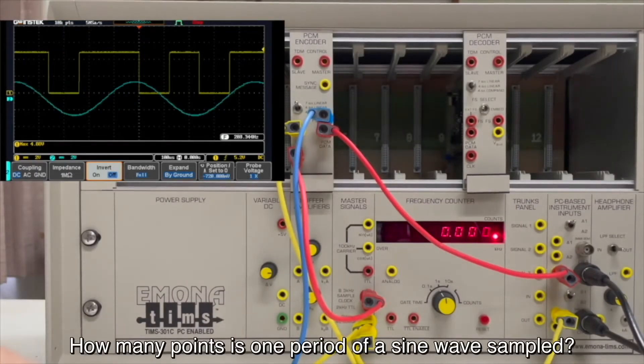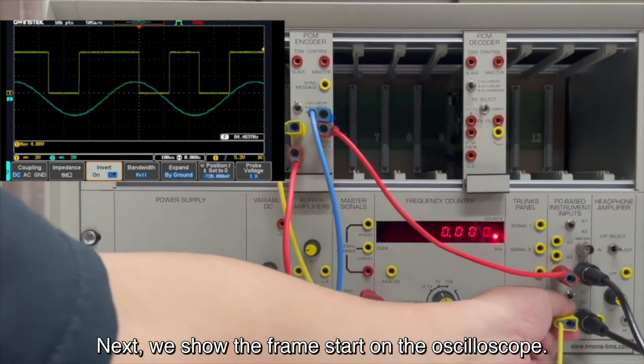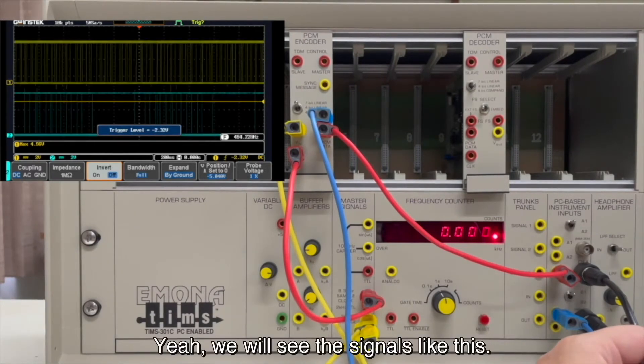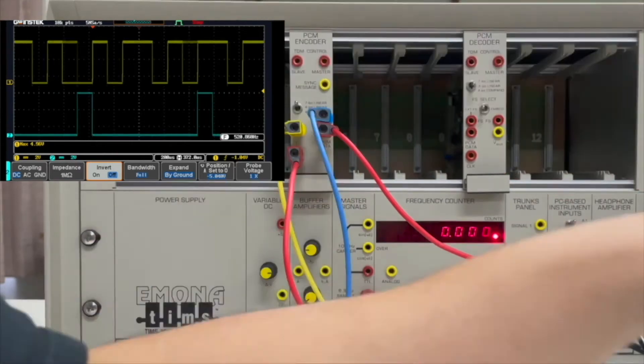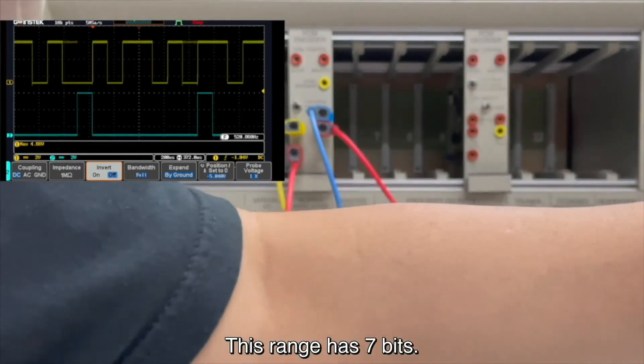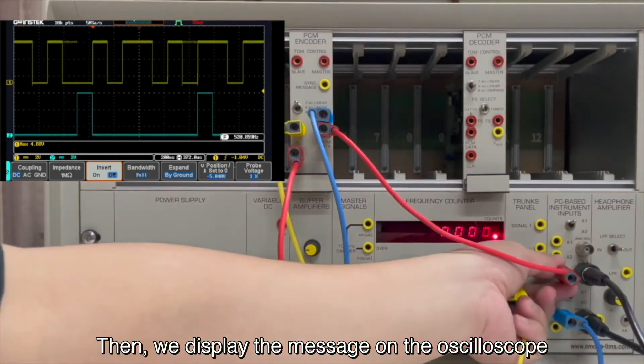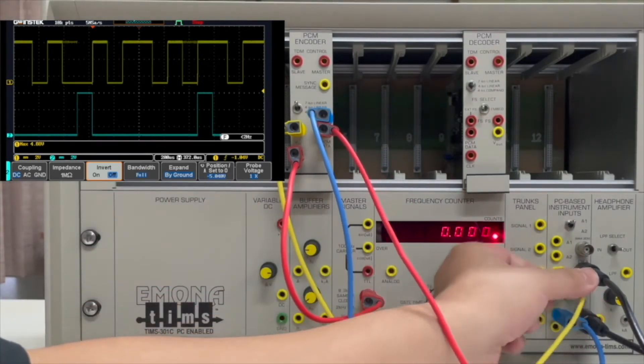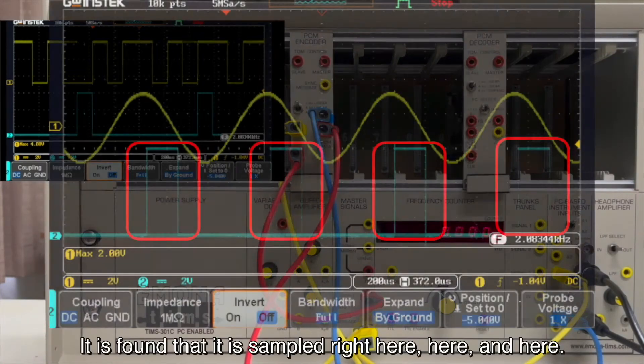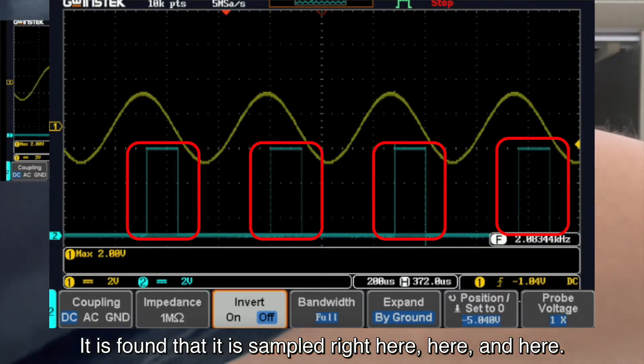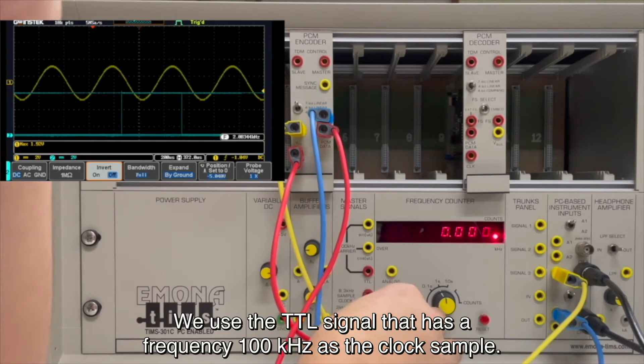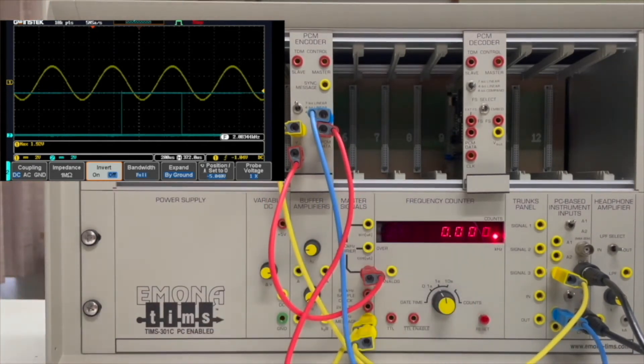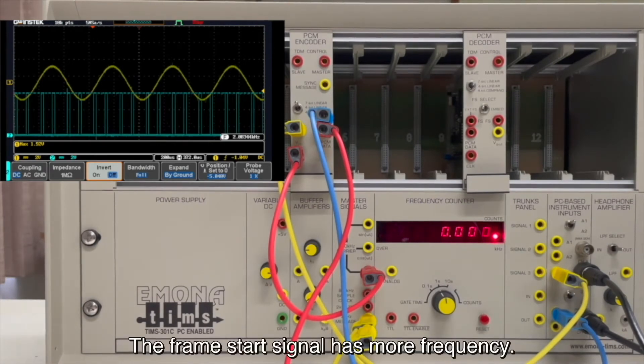How many points is one period of our sine wave sample? Next, we show the frame start on the oscilloscope. Yeah, we will see the signals like this. We use 7 bits. This link has 7 bits. Then, we detect the method on the oscilloscope to see how obtained it is sample. It is found that it is sample right here, here, and here. We use the TTL signal that has a frequency of 100kHz at the clock sample. The frame start signal have more frequency.